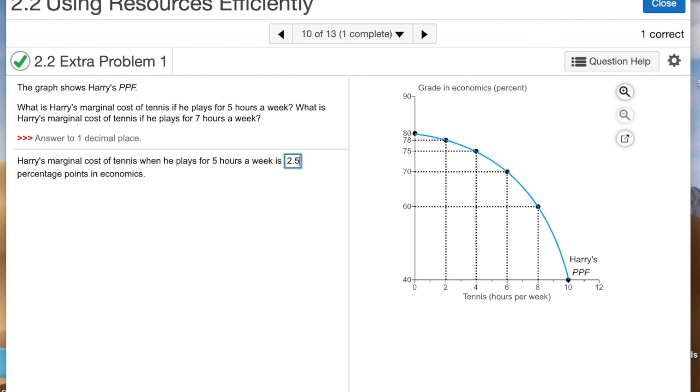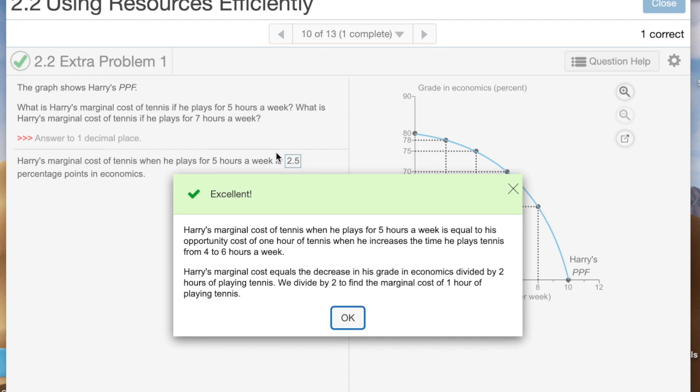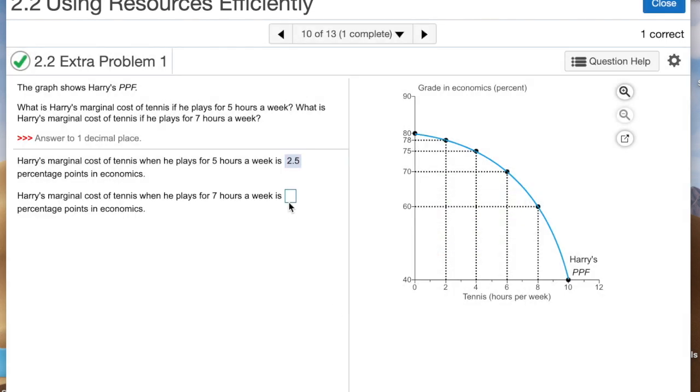This is marginal cost. We were looking at a two-hour block, but if you're talking marginal cost, you're going one increment at a time. So we want to see what it is for a one-hour block, so we're going to do the 2.5. When I hit enter, that automatically went to this check my answer down here, and then it gives you an explanation. Yes, his marginal cost when he plays five hours a week is equal to the opportunity cost of one hour of tennis when he increases the time he plays from four to six. We find the marginal cost by taking the difference in those two grades, which was five percent, and dividing that by two.